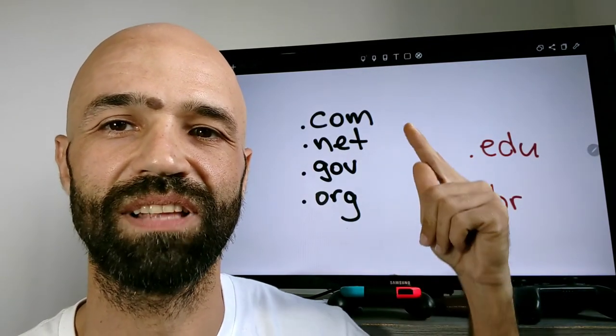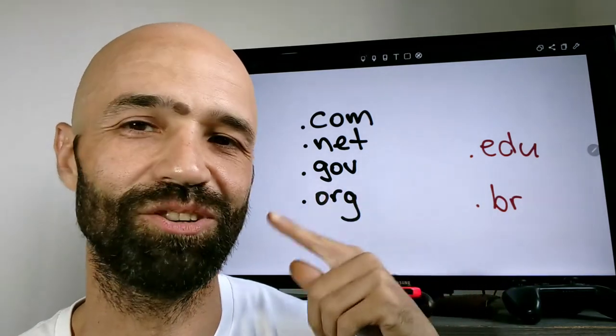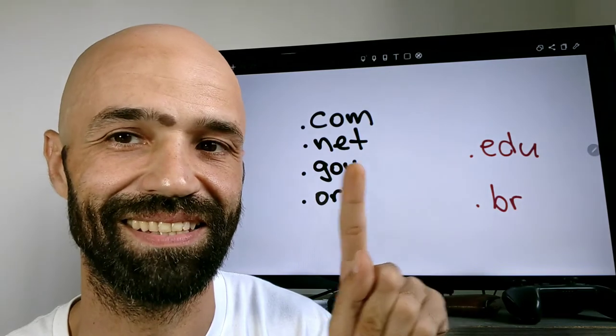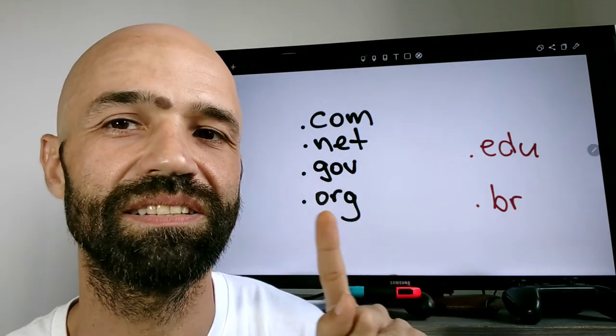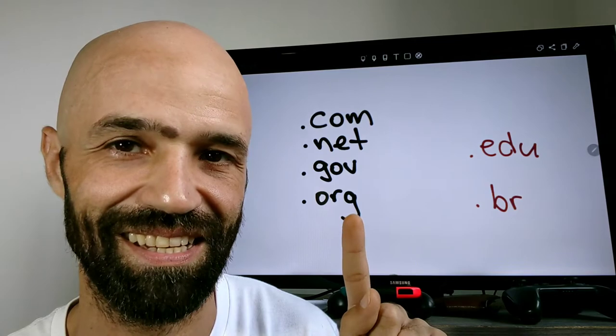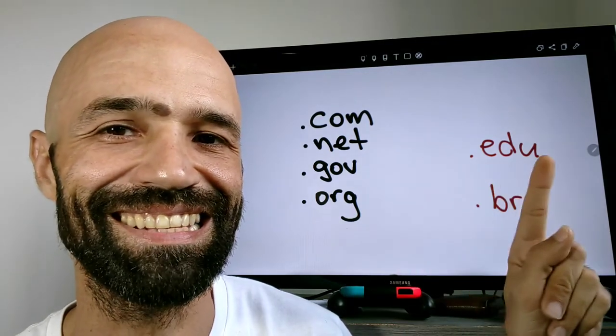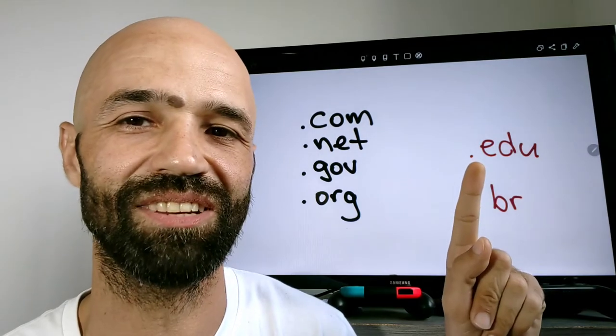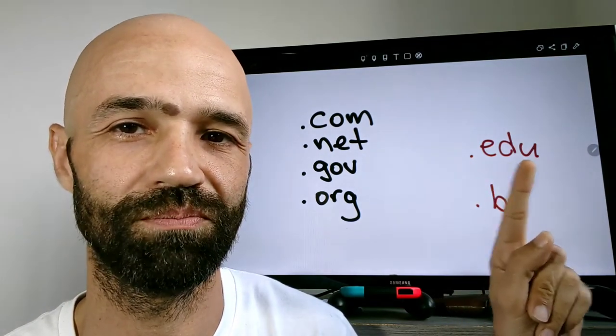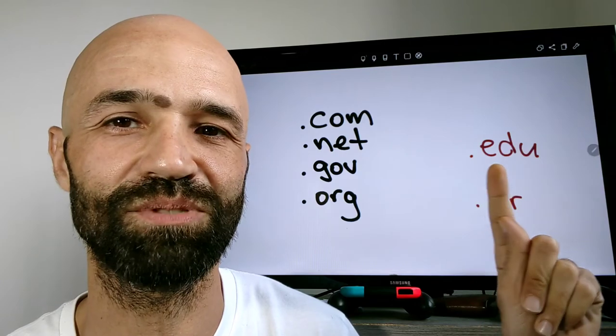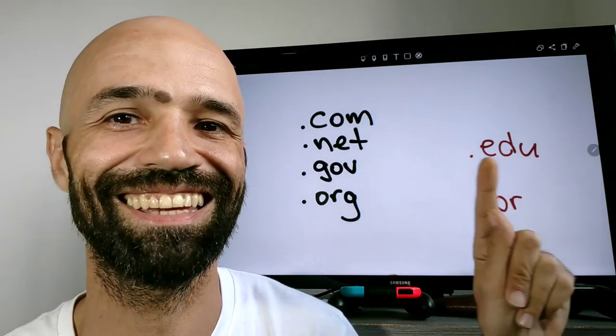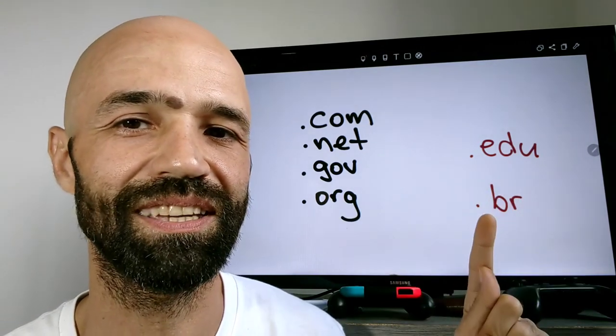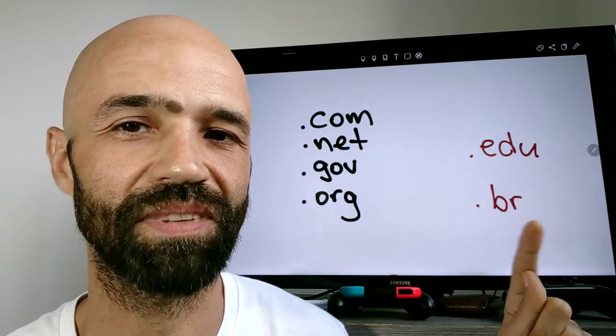Ok, então vamos lá. Esses daqui vocês vão falar como vocês estão falando uma palavra, né? Dot com, dot net, dot gov, dot org, right? Então, esse daqui, pra educação, vocês vão falar como vocês estão soletrando. Então é dot edu, ok? Então se tem um email ou um site que é edu, vocês têm que soletrar. Então é dot edu e dot br.